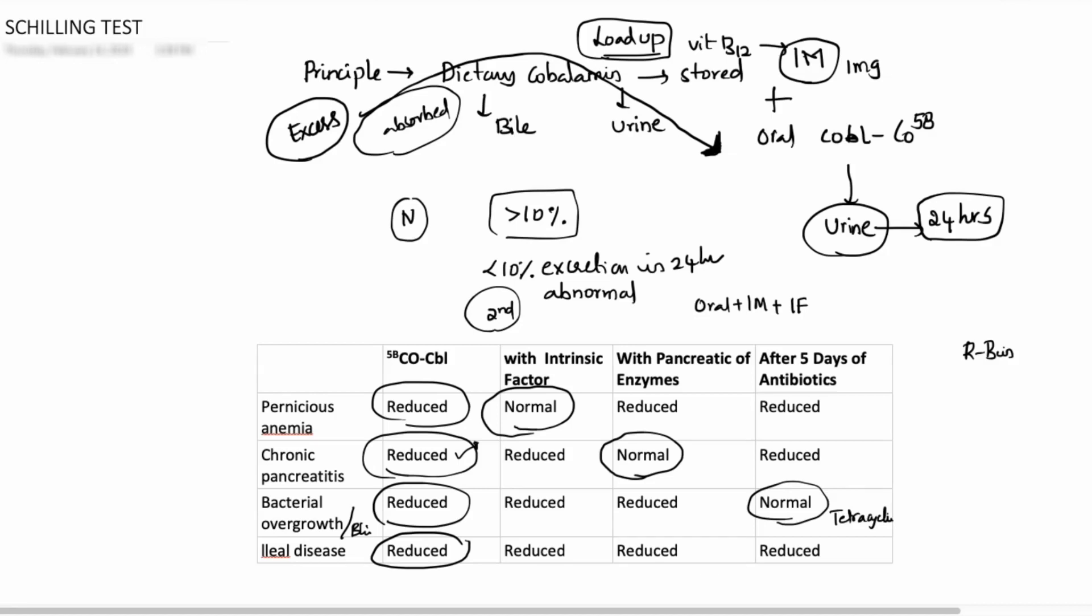Even after doing all these three things—intrinsic factor supplementation, pancreatic enzyme supplementation, or five days of antibiotics—if the patient still has reduced levels of cobalamin in the urine, the patient might be suffering with ileal disease, because it is the ileal mucosa which is taking in the dietary cobalamin plus intrinsic factor.